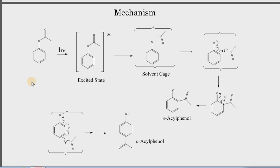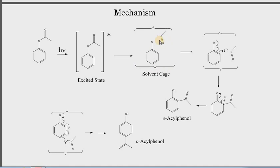In the first step, the phenol ester dissociates. It absorbs photo energy and converts into the excited state. In this excited state, it dissociates to form two free radicals — an oxy free radical and an acyl free radical.